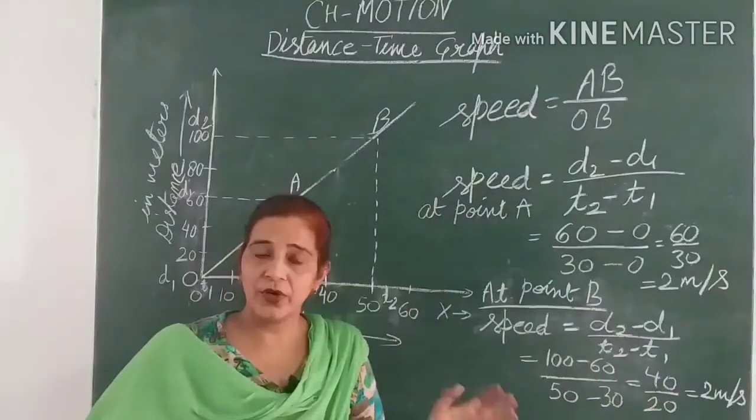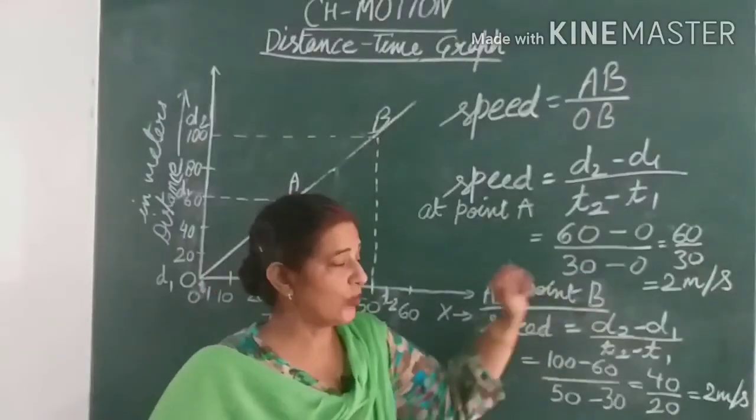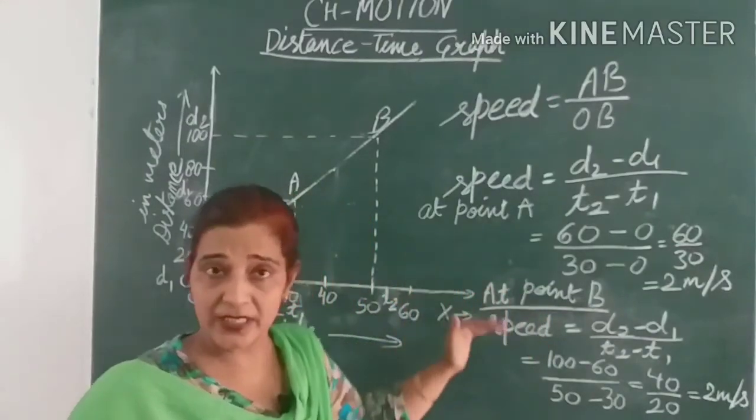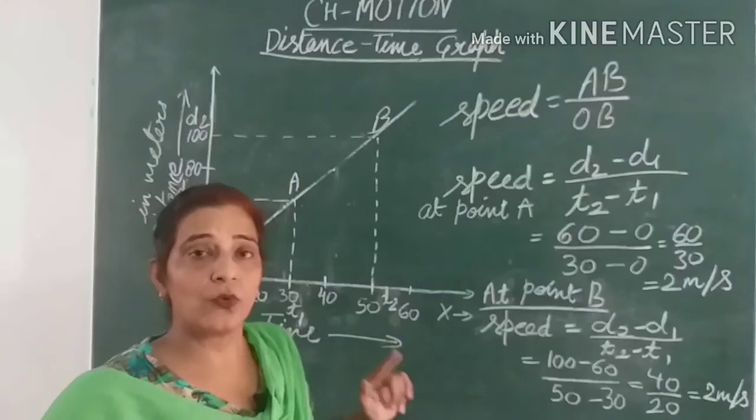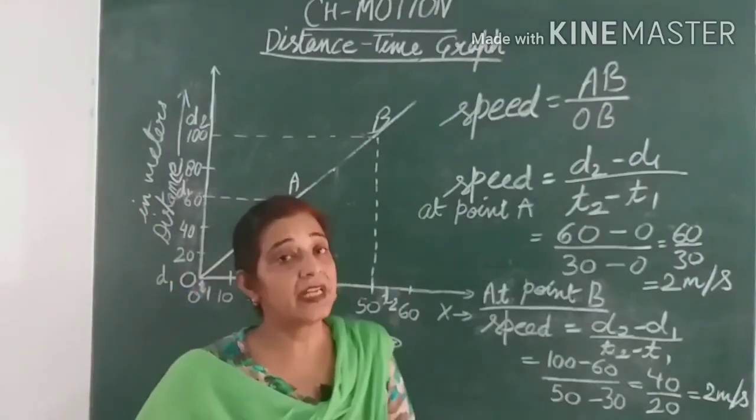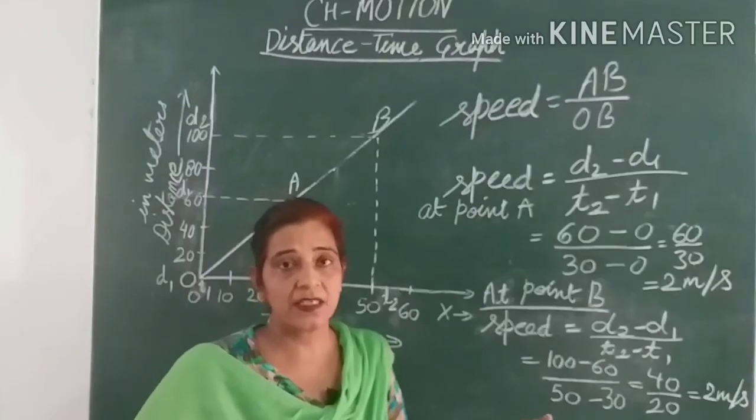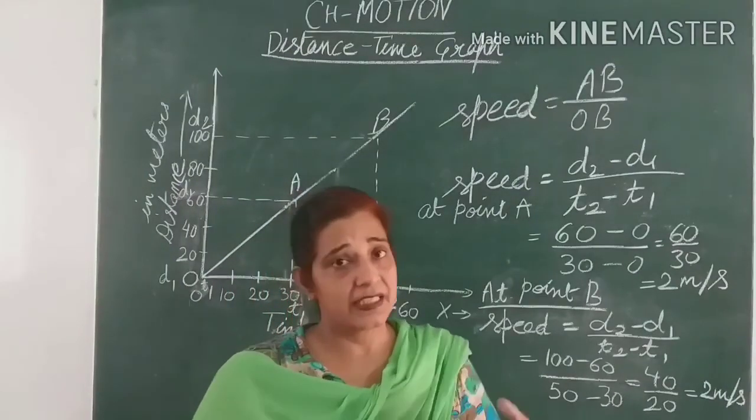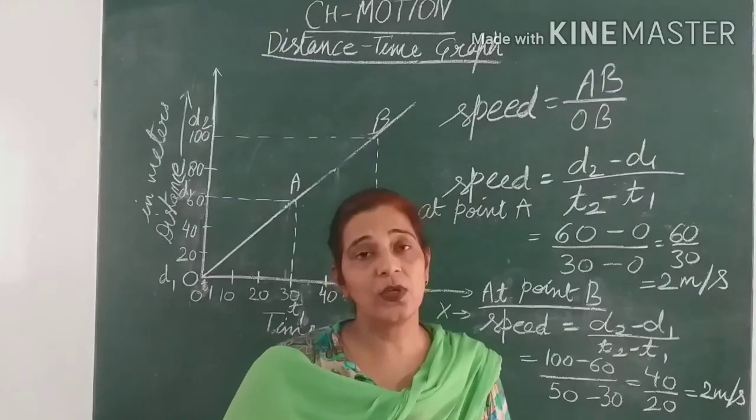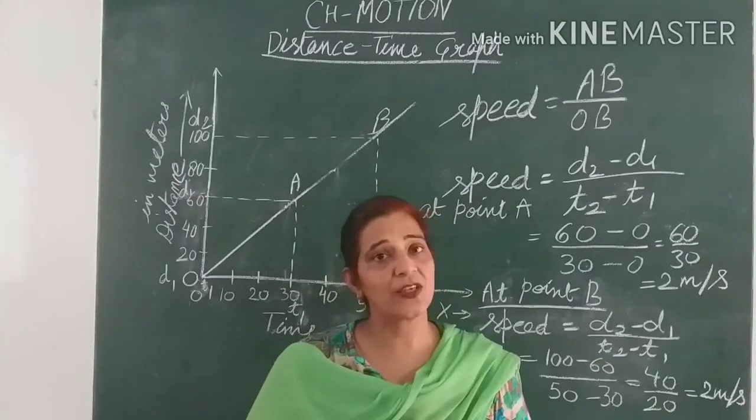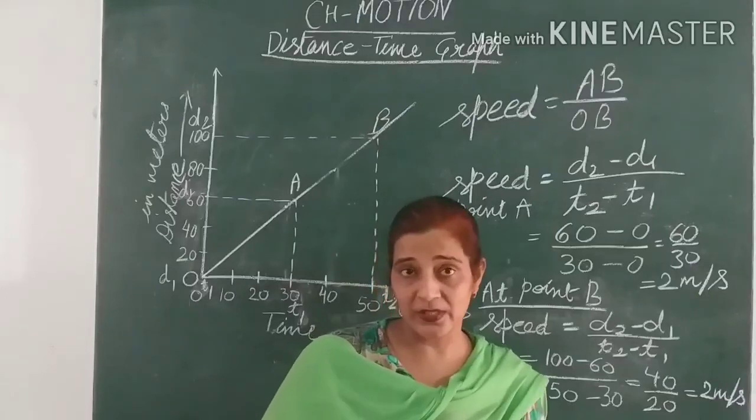So what we will learn from these two readings: this is also 2 meters per second at point A and speed is also 2 meters per second at point B. So what it is telling us is that the body is moving with uniform speed. So practice more for this graph, take some data, practice more and it will be much easier for you to calculate the speed of a moving body at a particular point.